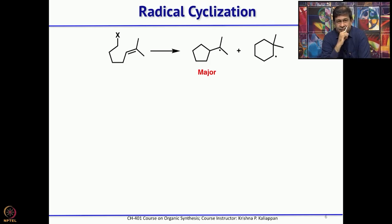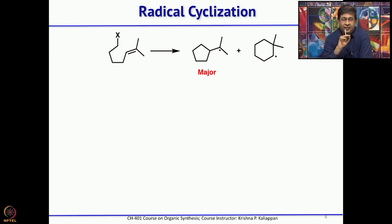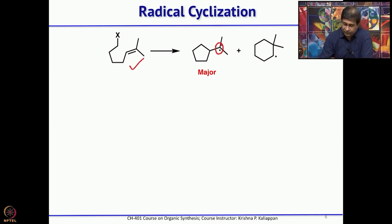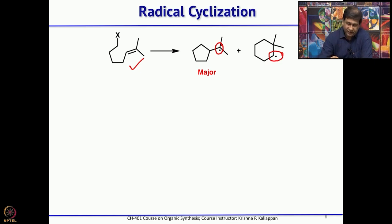What about regiochemistry? When both exo and endo are allowed for the same substrate, which one will be favored? For example, if you take a substrate where 5-exo will give a tertiary radical whereas 6-endo will give a primary radical — from the stability point of view the tertiary radical is more stable, so 5-exo is more favored than 6-endo.